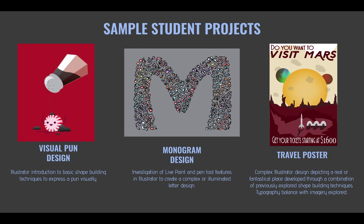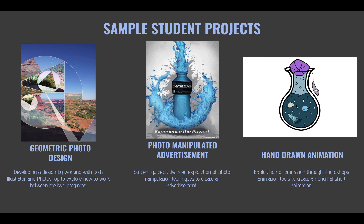We will end our main projects with Illustrator by creating a travel poster — a complex Illustrator design that depicts a real or fantastical place, developed through a combination of previously explored shape-building techniques and typography. Balance with the imagery will also be explored, such as headers, secondary typography, and hierarchy. We'll then shift gears and look at how we can work between Photoshop and Illustrator with the geometric photo design, where students create the framework of shapes in Illustrator and then take that to Photoshop to fragment and reassemble a photograph of their choosing.